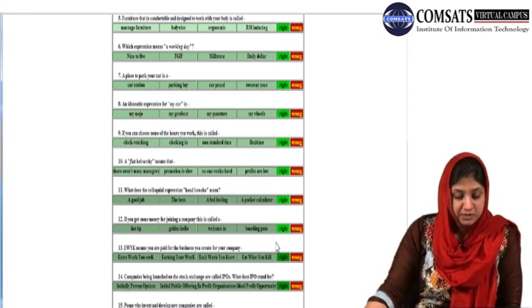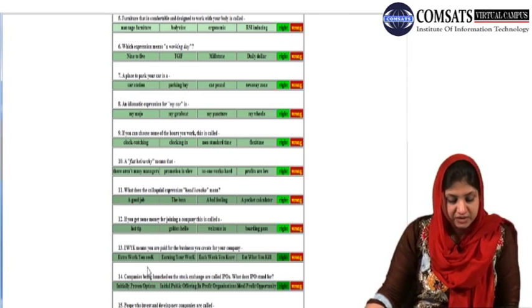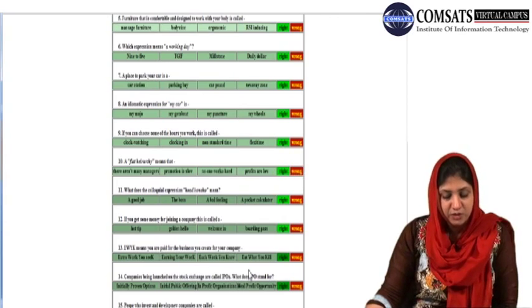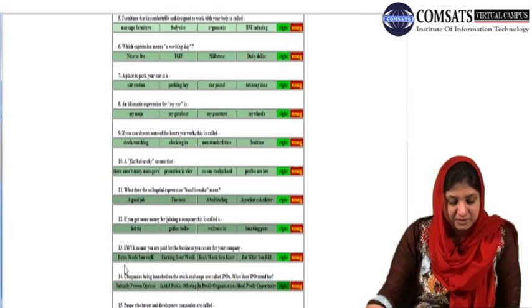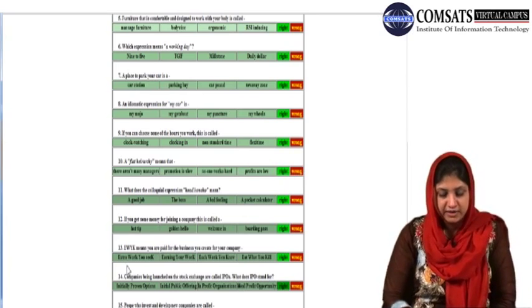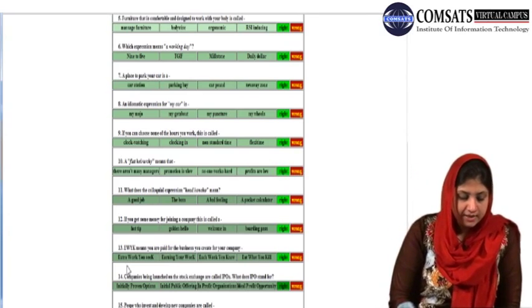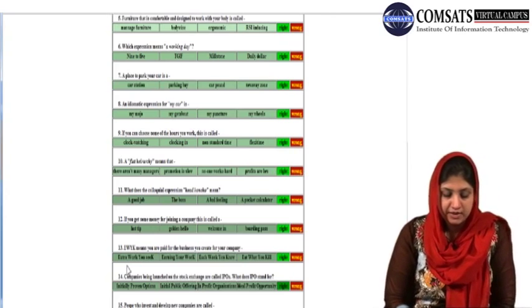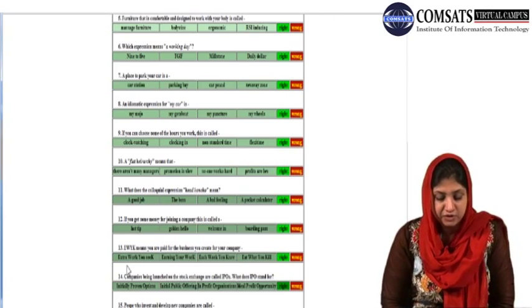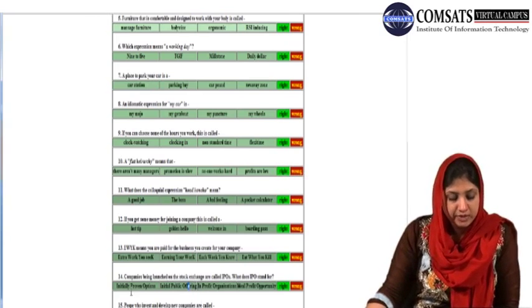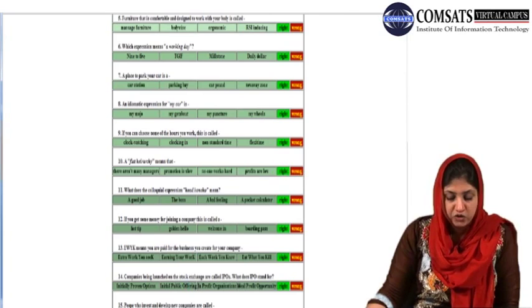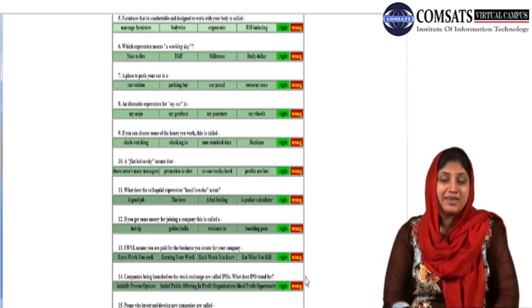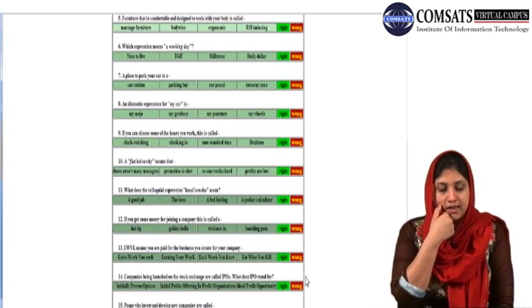If you get some money for joining a company, this is called a golden hello. EWYK means eat what you kill - you are paid for the business you create for your company. Companies being launched on the stock exchange are called IPOs. What does IPO stand for? Initial public offering. People who invest and develop new companies are called venture capitalists. This was your vocabulary drill for the exercise related to informal letters workshop.